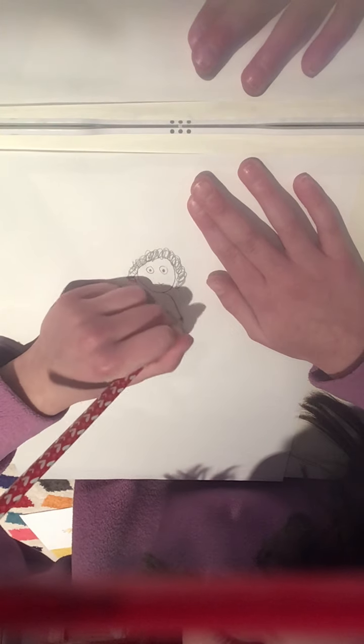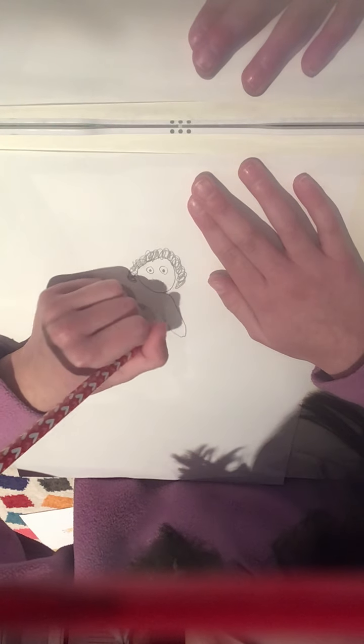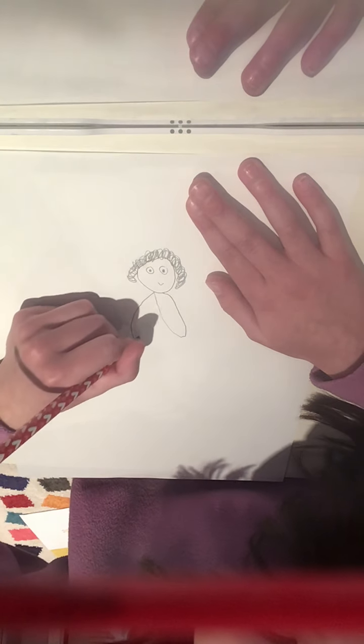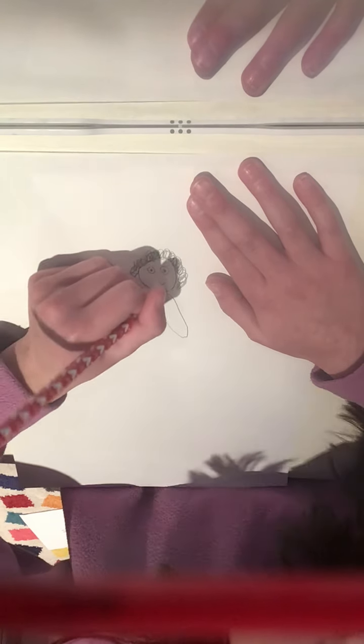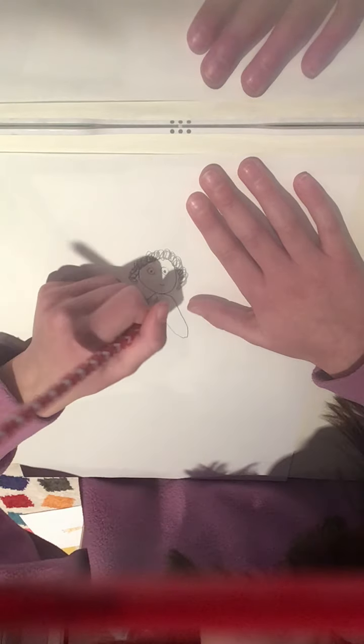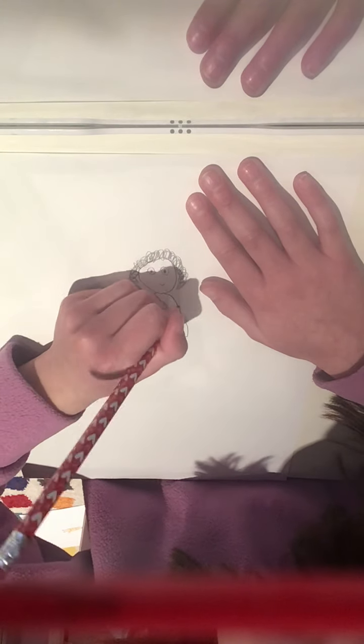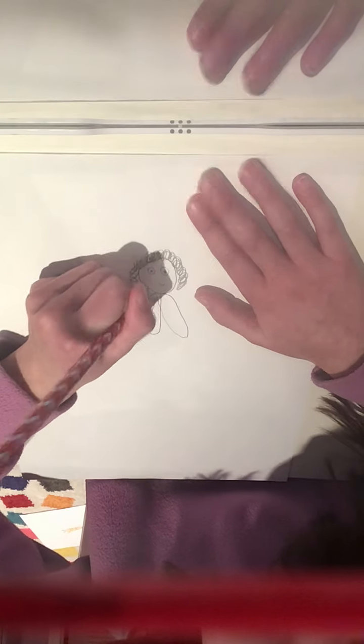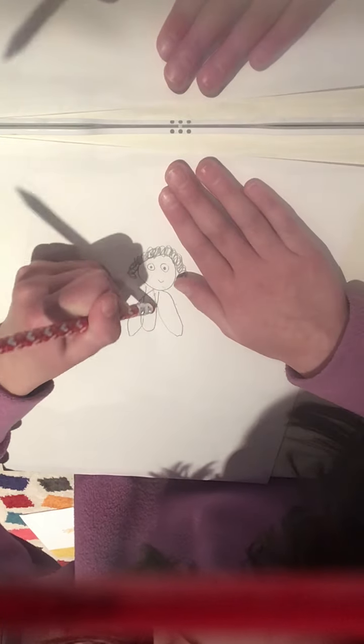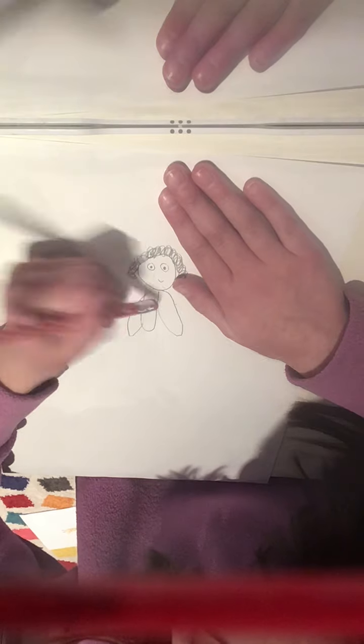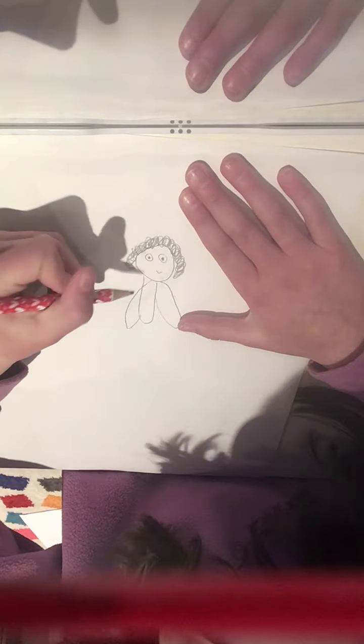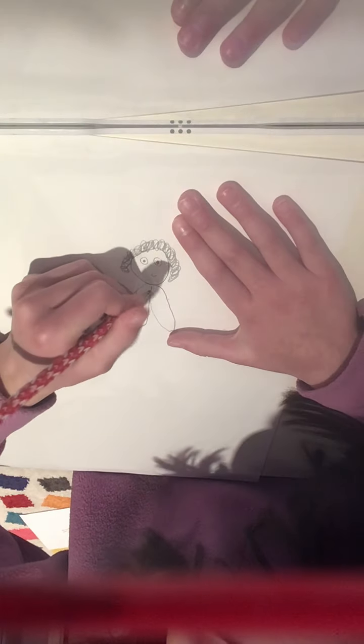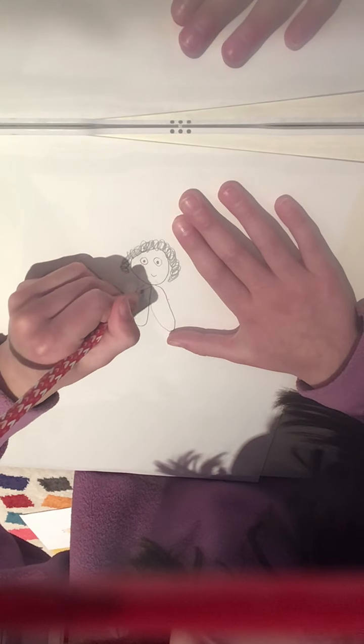So then, since he doesn't really wear a shirt, he has like these cloak drapings all over him, we just do this. And then we do one extra here just to erase these lines. Perfect. Now, add the designs that you want.